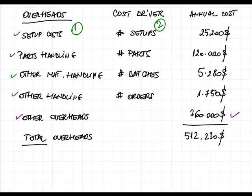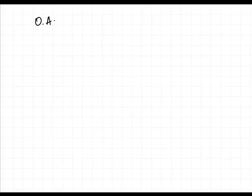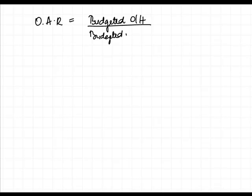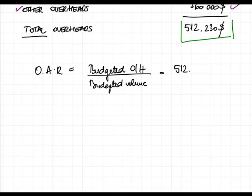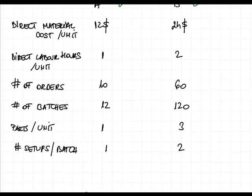The first requirement is to calculate the total production cost of products A and B using the traditional method. This means adding the direct material costs to the allocated overheads, which will be allocated based on labor hours. We need to calculate the overhead absorption rate (OAR), which equals the budgeted amount of overheads — $512,230 — divided by the budgeted volume in direct labor hours.